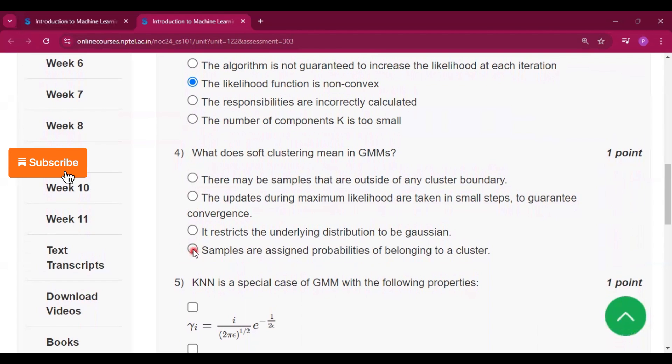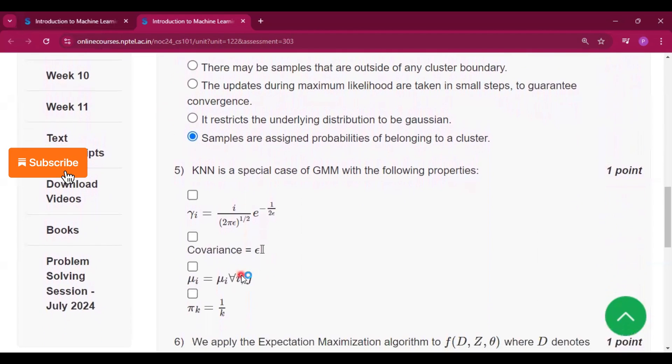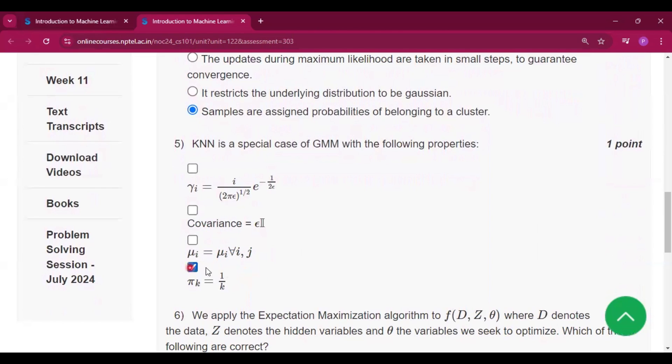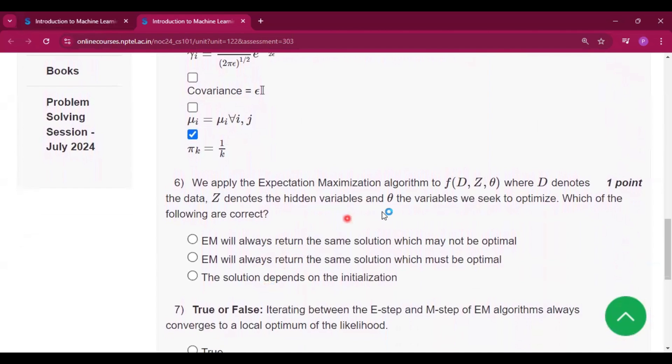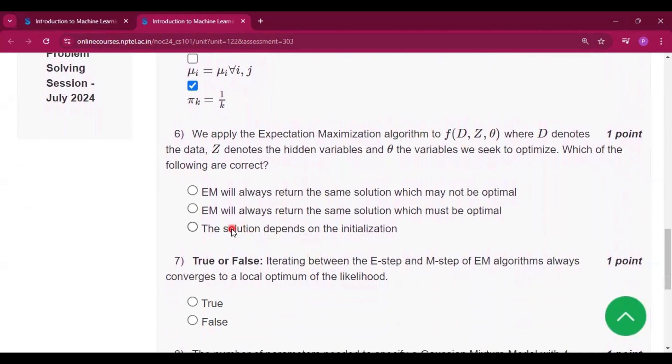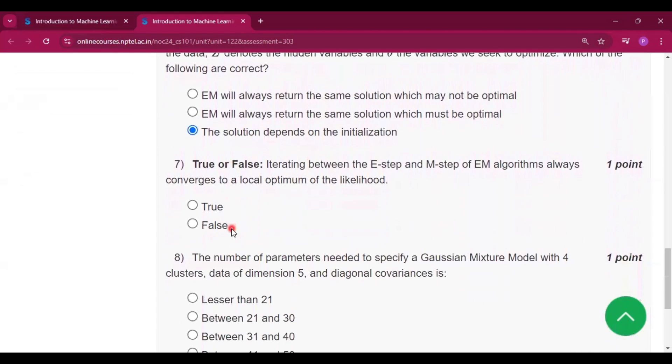So question number 4, the answer will be option D, and question number 5, the option will be option D. For question number 6, we apply the Expectation-Maximization algorithm. This will be option C. Question number 7, option is A.